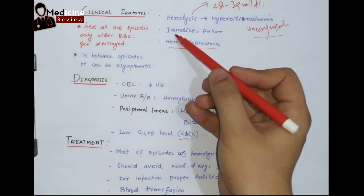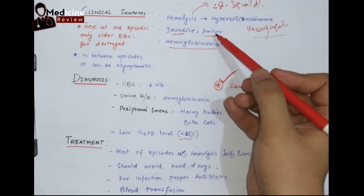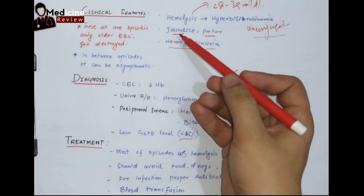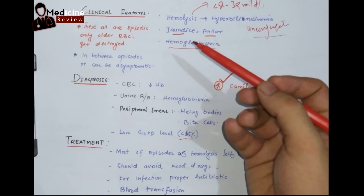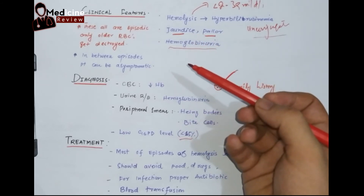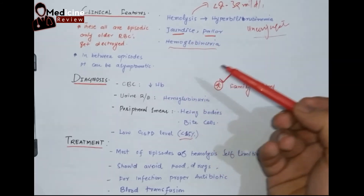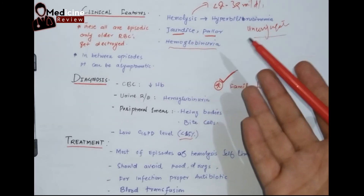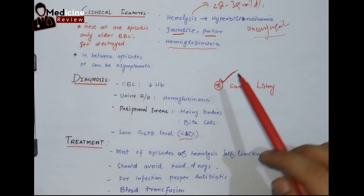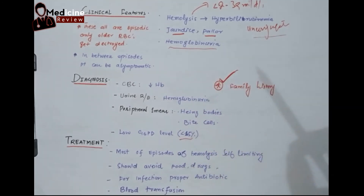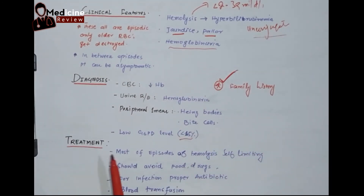Because of the hemolysis there will be jaundice and pallor. For jaundice we look at the sclera or the mucous membrane of the mouth; if jaundice is very severe it can even be seen on the skin. There will be pallor and hemoglobinuria — hemoglobin will pass into the urine because of its metabolism.